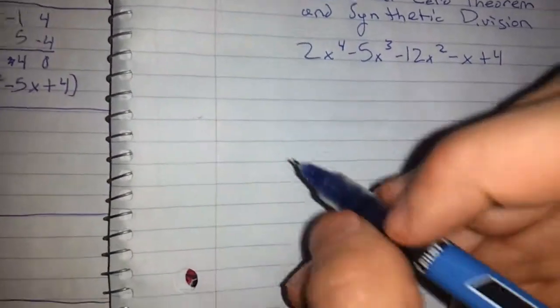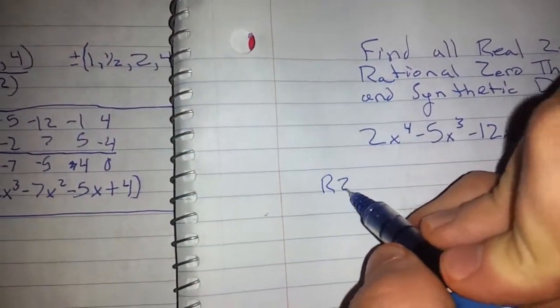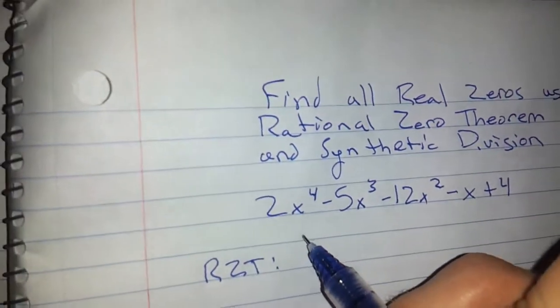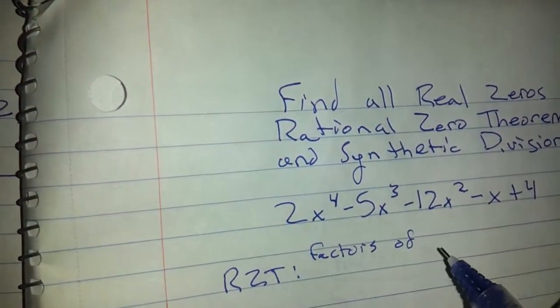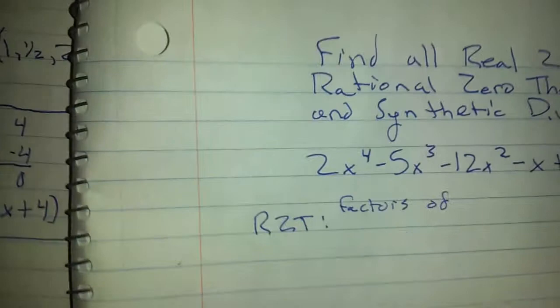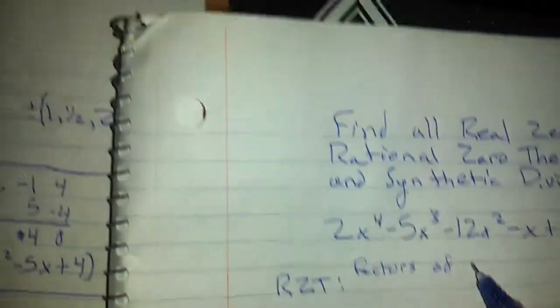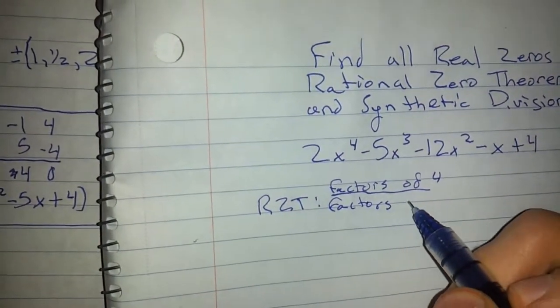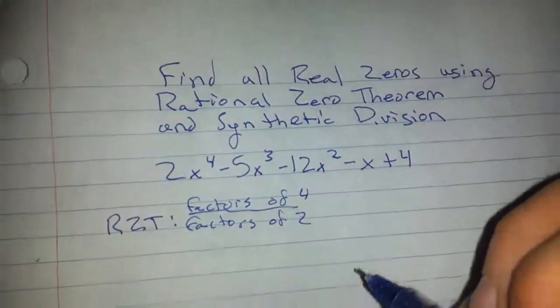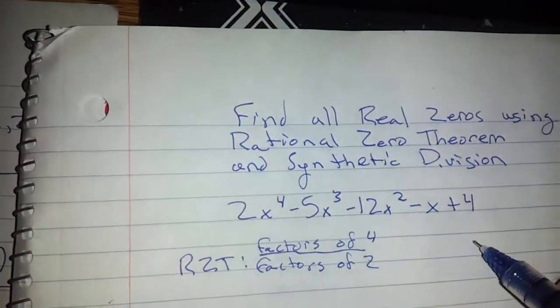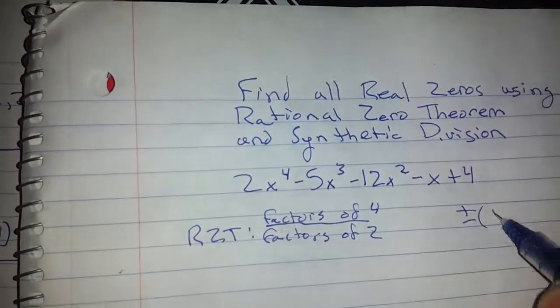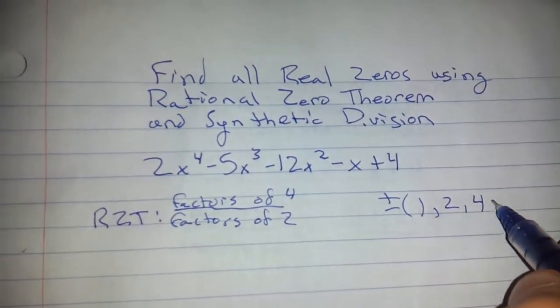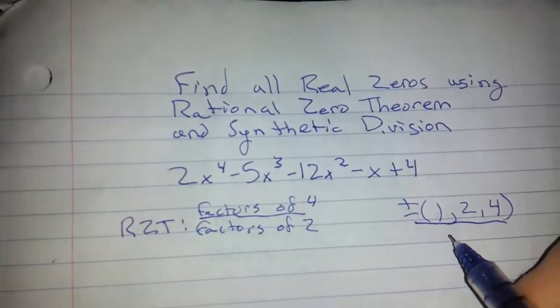We're going to start off using the rational zero theorem, which is all factors of 4 over factors of 2. It's always going to be the last digit over the first digit. The factors of 4 are 1, 2, and 4. And factors of 2 are 1 and 2.